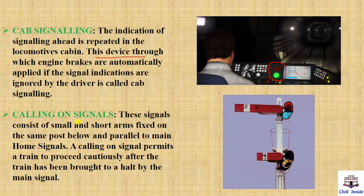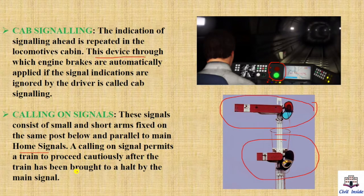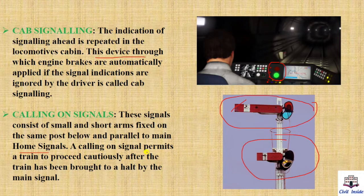Next, calling on signals. These signals consist of a small short arm fixed on the same post, below and parallel to main home signals. The home signals are the ones shown on a platform. Calling on signal permits the train to proceed cautiously after the train has been brought to a halt by the main signal. You have to observe this calling on signal and slow down gradually.